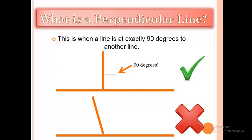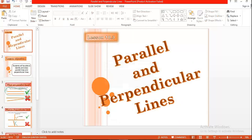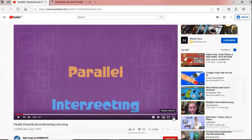Look here: this is a right angle. But look at this one — it is not a right angle, it is an obtuse angle. When the angle between two lines is obtuse, this is not a perpendicular line. Now I will show you this video.